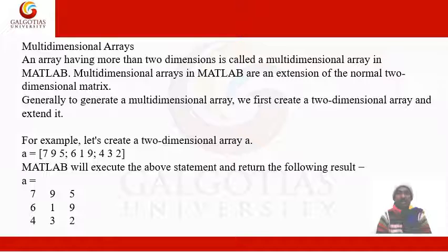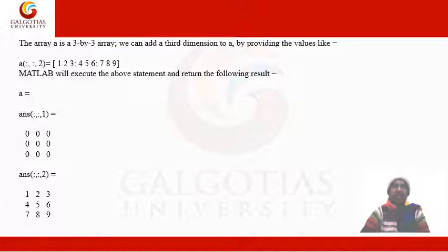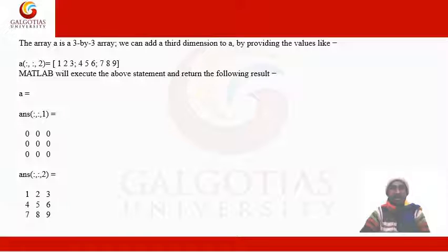For example, a matrix a = [1 7 9 5; 6 1 9; ...] defines a 3×3 array. We then add a third dimension by providing values using the syntax a(:,:,2) = [set of values]. When executed, MATLAB first fills with zeros and then populates with the provided values.